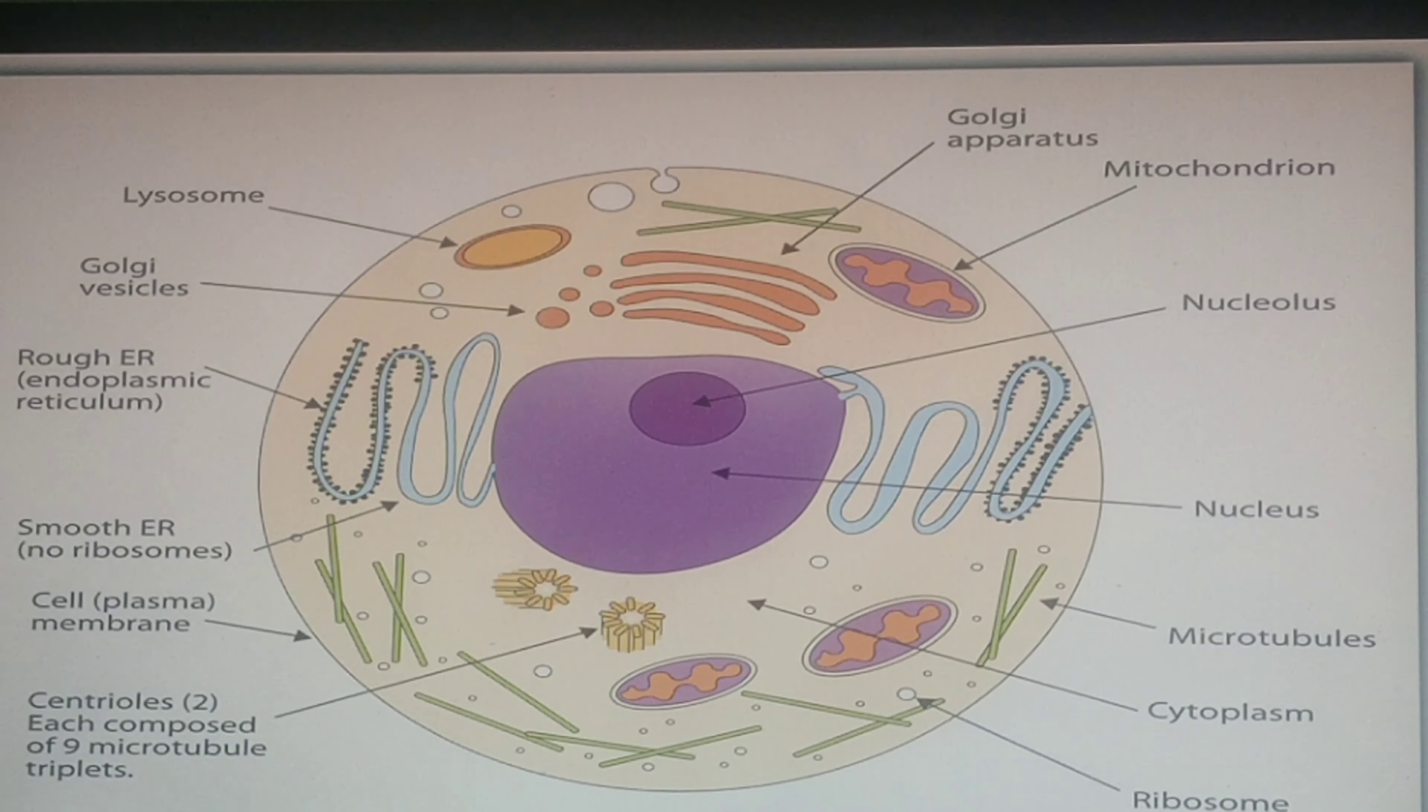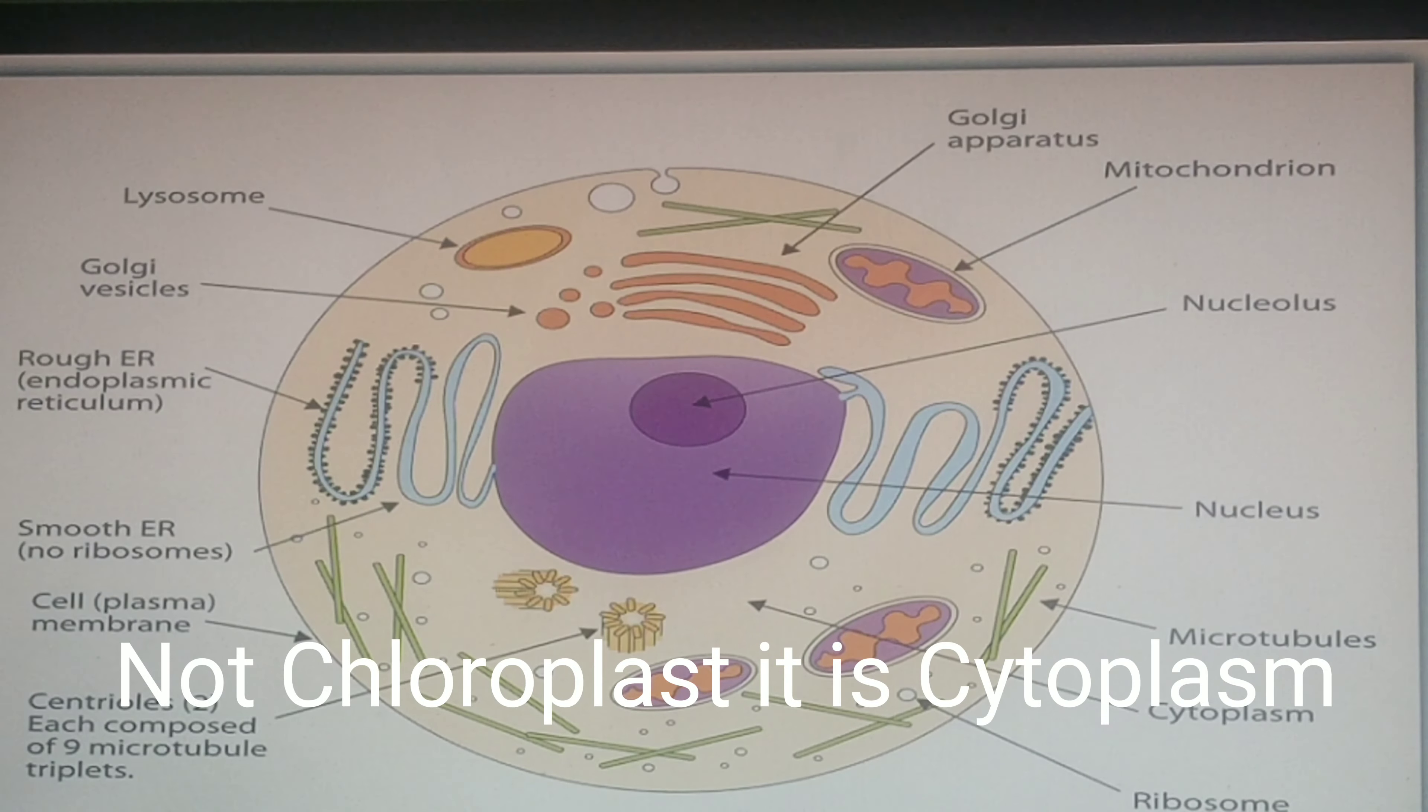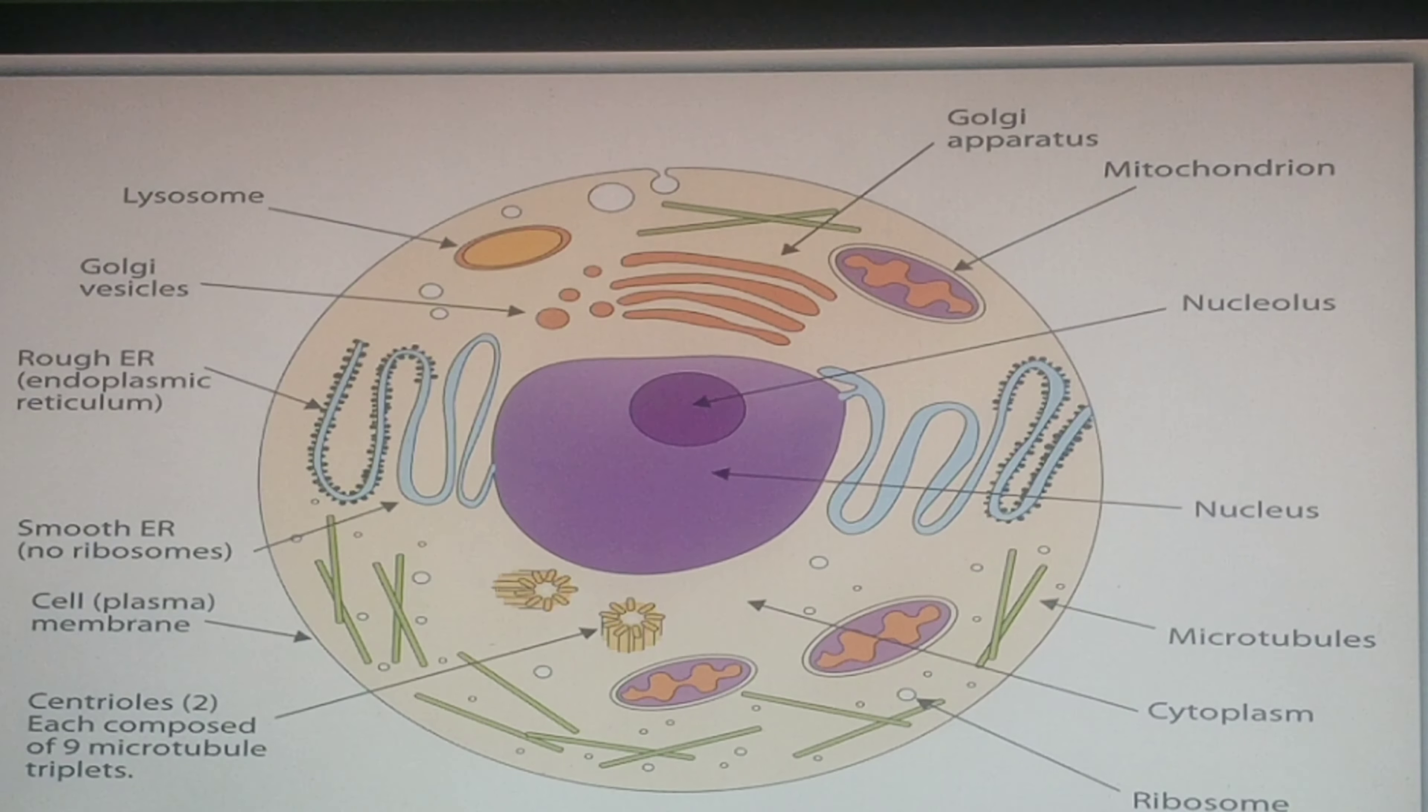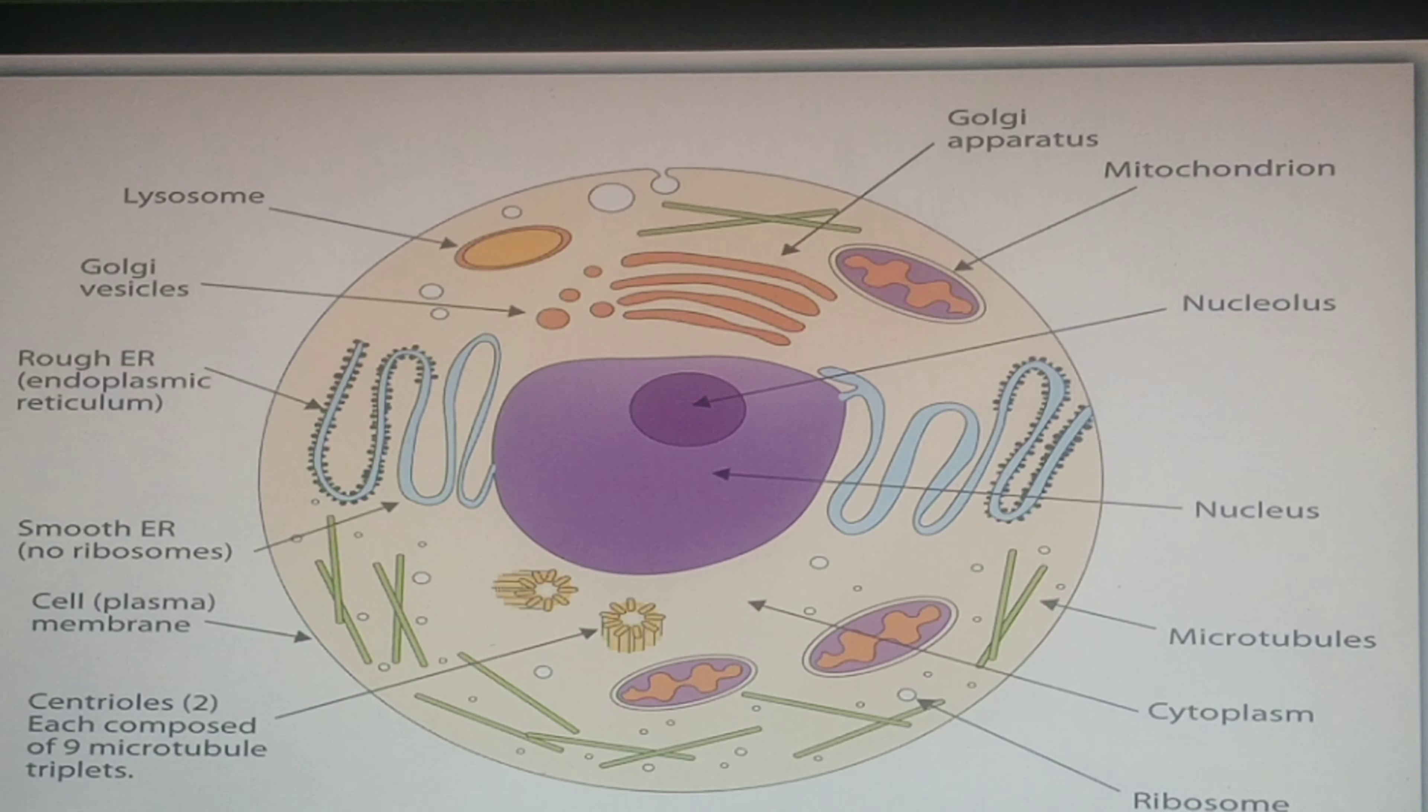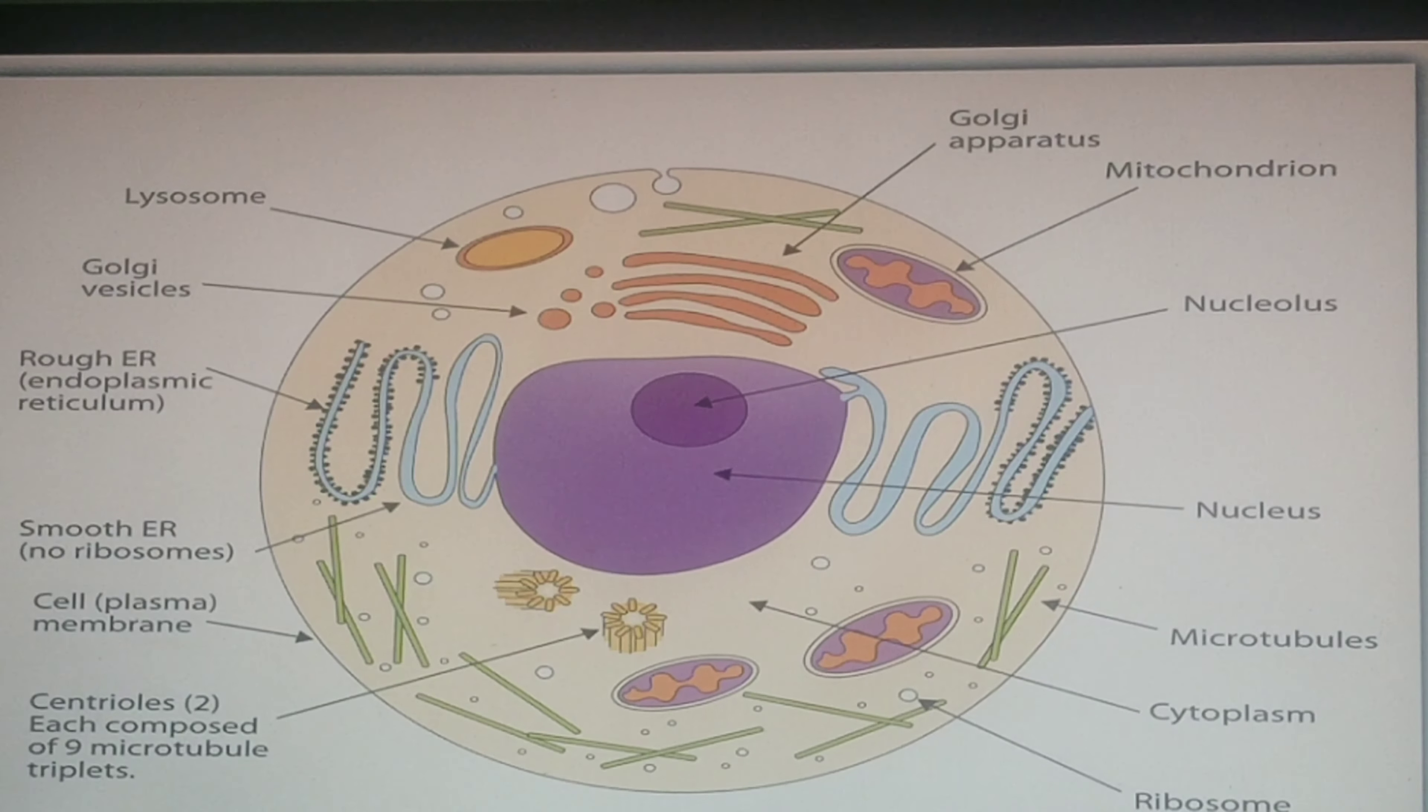And now let us see about the cytoplasm. The cytoplasm is a network of filaments and tubules found throughout the animal cell. It is also found throughout the plant cell. I am sorry, I forgot to explain this in the plant cell. Now I am explaining in the animal cell. This is the same in plant cell, animal cell and the human cell. A common thing.